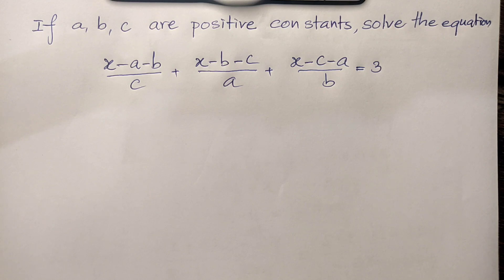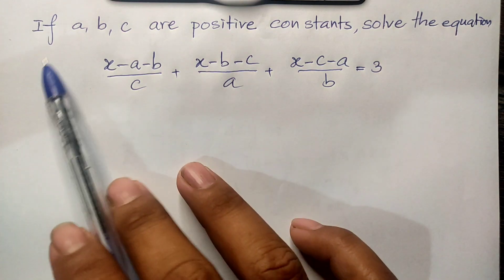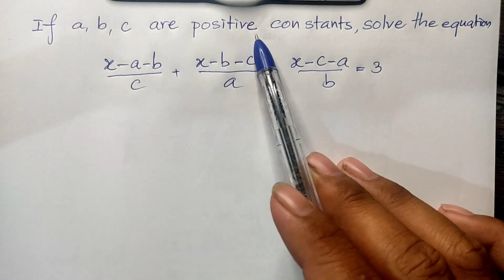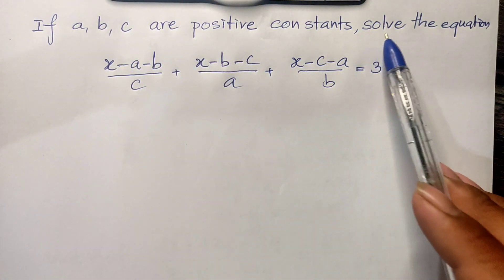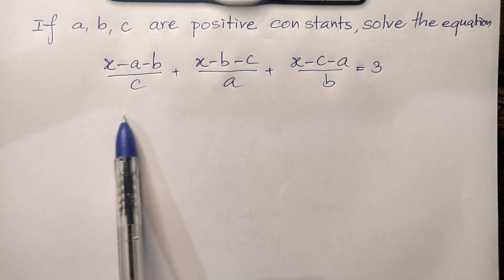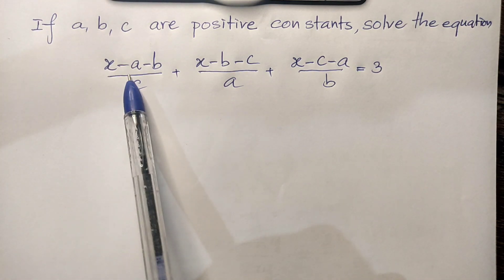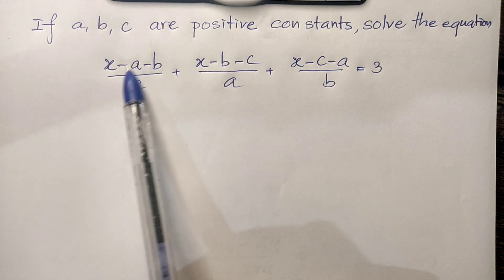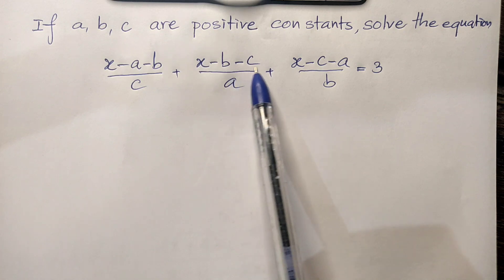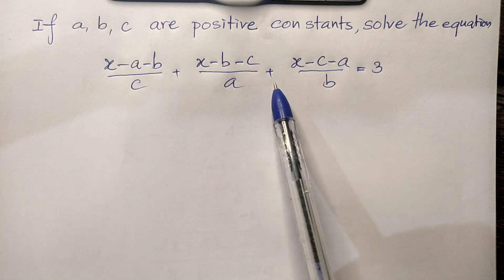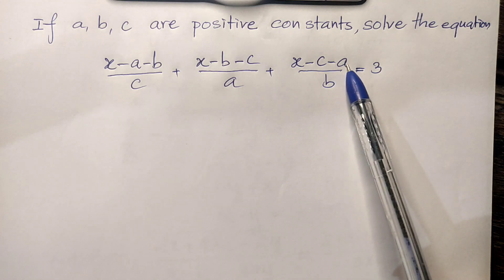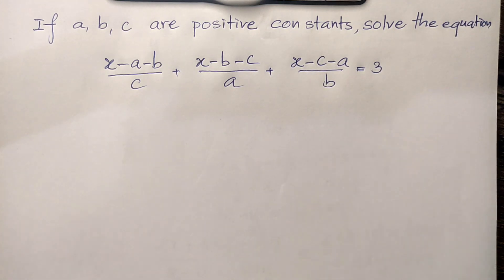Today I have an exercise on purpose. If a, b, c are positive constants, the equation is: (h minus a)(h minus b) divided by c, plus (h minus b)(h minus c) divided by a, plus (h minus c)(h minus a) divided by b, is equal to 3.